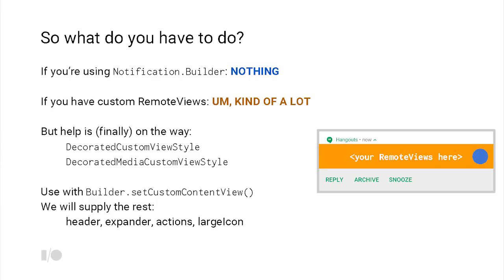What you can see here is essentially a schematic — the orange section is where you do whatever you want inside of remote views, just like before. But the system will then put in the expand indicator, the app accountability, the app name at the top, and even the actions at the bottom. So if you've got a custom weather widget but you want it to match the system style, you're good to go.